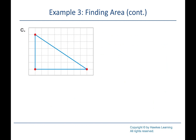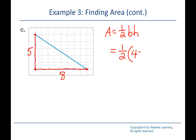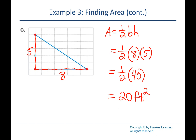Shape C is a triangle: the vertical side is 5 feet (height) and the bottom is 8 feet (base). Area = ½ × 8 × 5 = ½ × 40 = 20 square feet. It's fine to punch ½ × 8 × 5 directly into the calculator — this one just happened to be easy to do mentally.